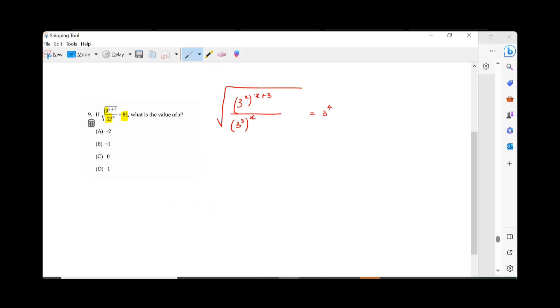Now, go ahead and multiply the numerators. What do you get? Square root of 3 power 2x plus 6 divided by 3 power 3x equals 3 power 4. Am I right?